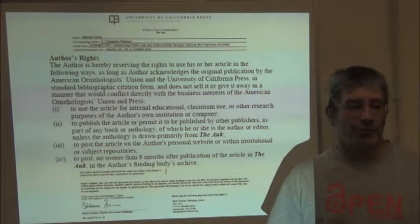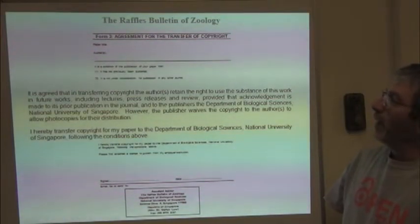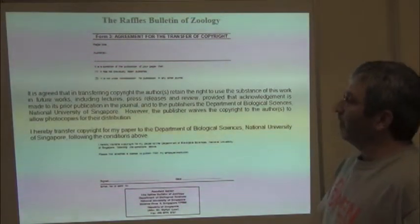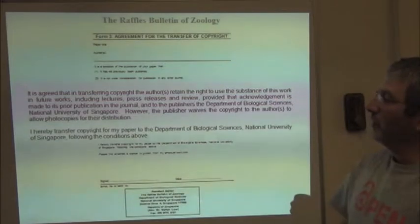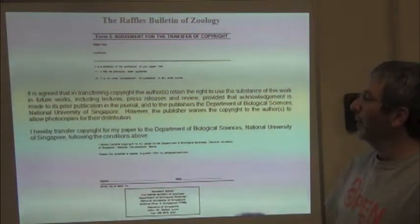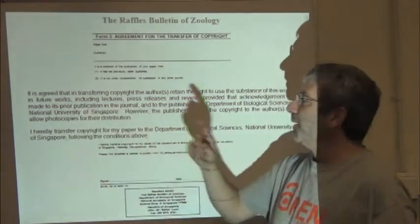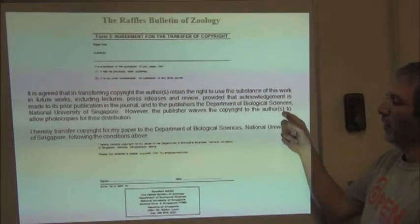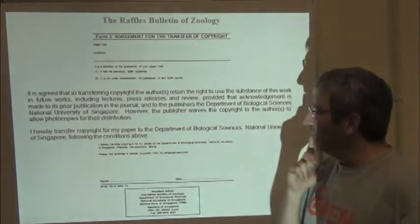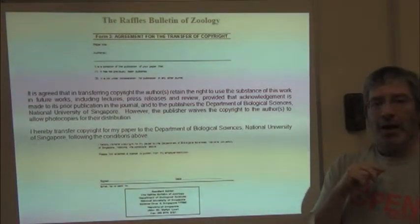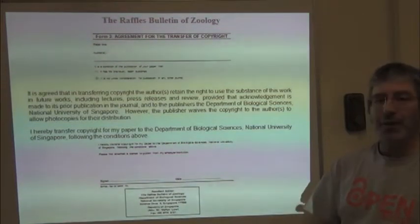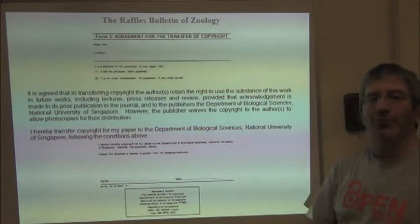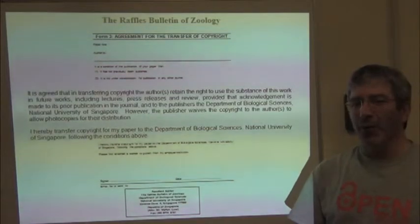But now we're going to start looking at ones that are worse. Here we're with the Raffles Bulletin of Zoology. It is agreed that in transferring copyright, the author retains the right to use the substance of this work in future works — that's good — provided that acknowledgement is made to prior publication in the journal. However, the publisher waives the copyright to the author to allow photocopies for their distribution. I don't know what that meant, and the funny thing was I asked the editor and the editor didn't know what that meant either. Sometimes you really have to think about what is being said.